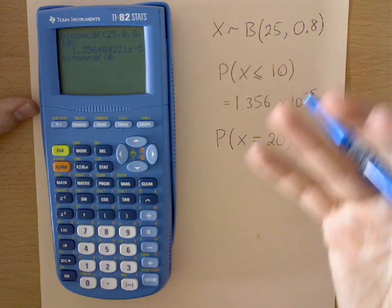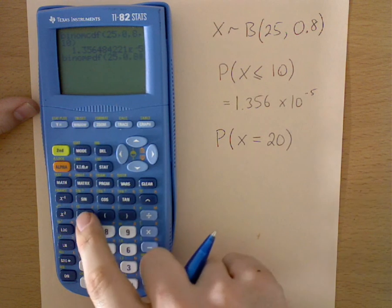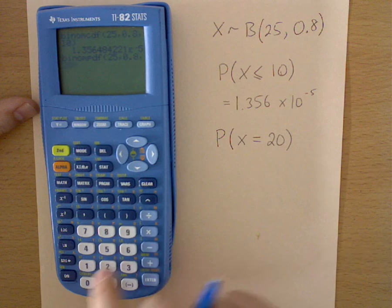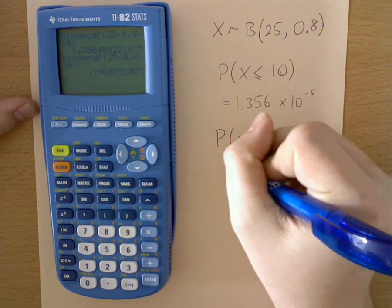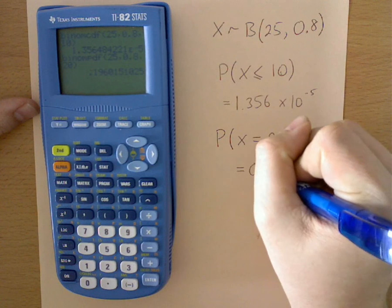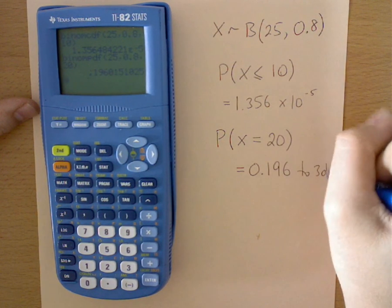So we're putting in the information as usual, so 25, comma, 0.8, comma, 20, close bracket, and equals. And we find that that probability is 0.196 to three decimal places.